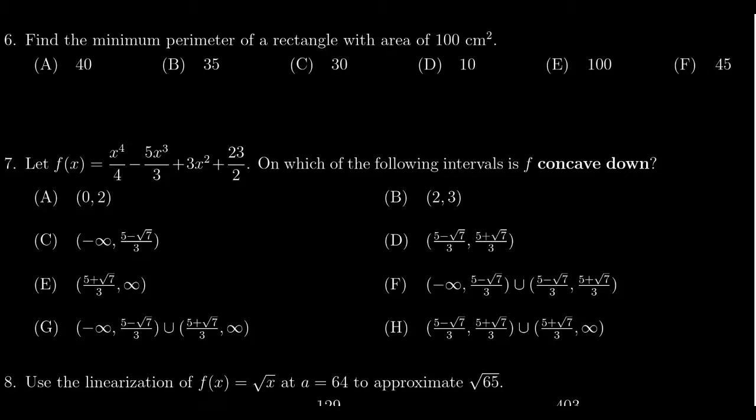So perimeter is going to be your optimizing function here. Perimeter is equal to two times length plus two times the width. We want to minimize this.